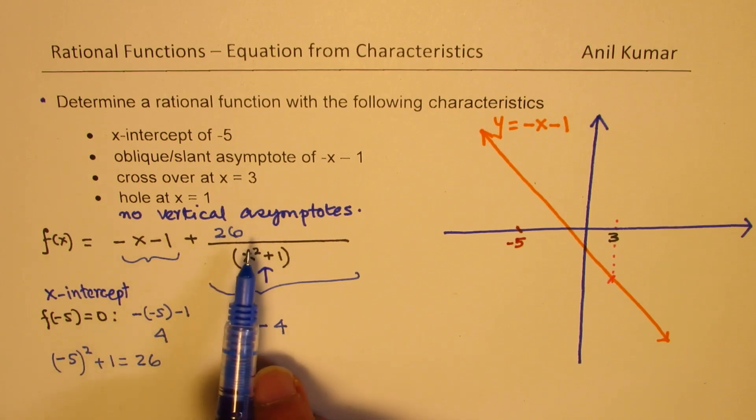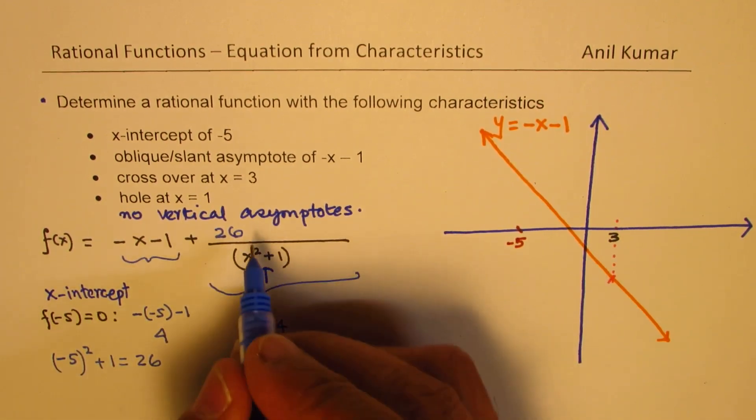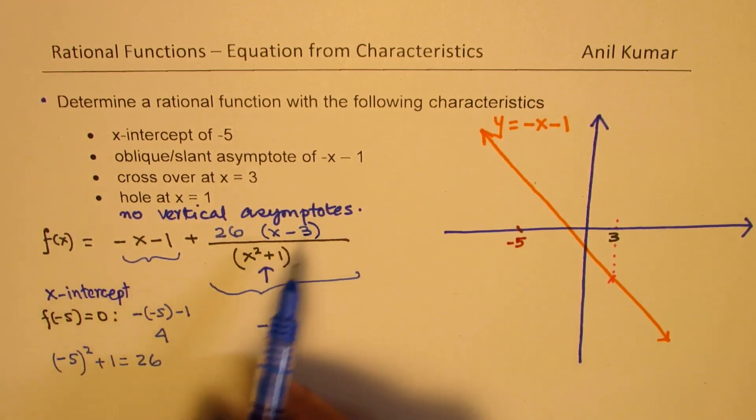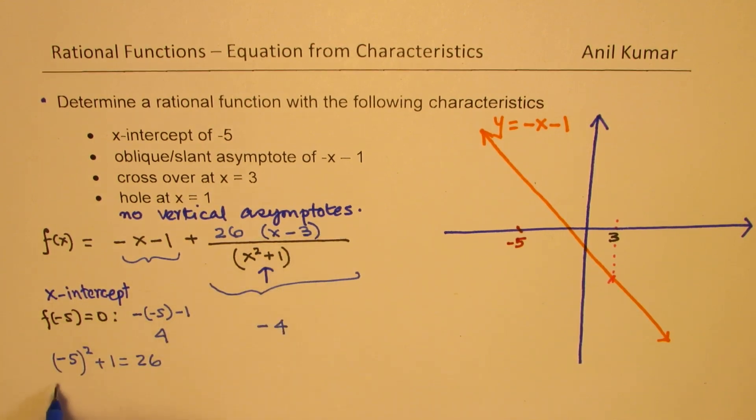Now I have to multiply by a factor which results into 4 when I substitute minus 5. And we have to also work with 3. So let me just try this value, x minus 3.